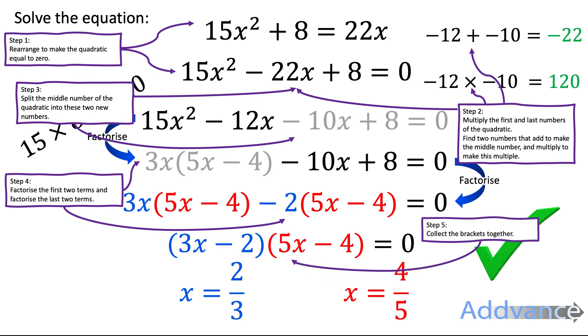And then step five, we collect the brackets together. So we made the blue bracket one bracket and the red bracket another bracket. Finally, step six, we solved each bracket to be equal to zero if it does say to solve.